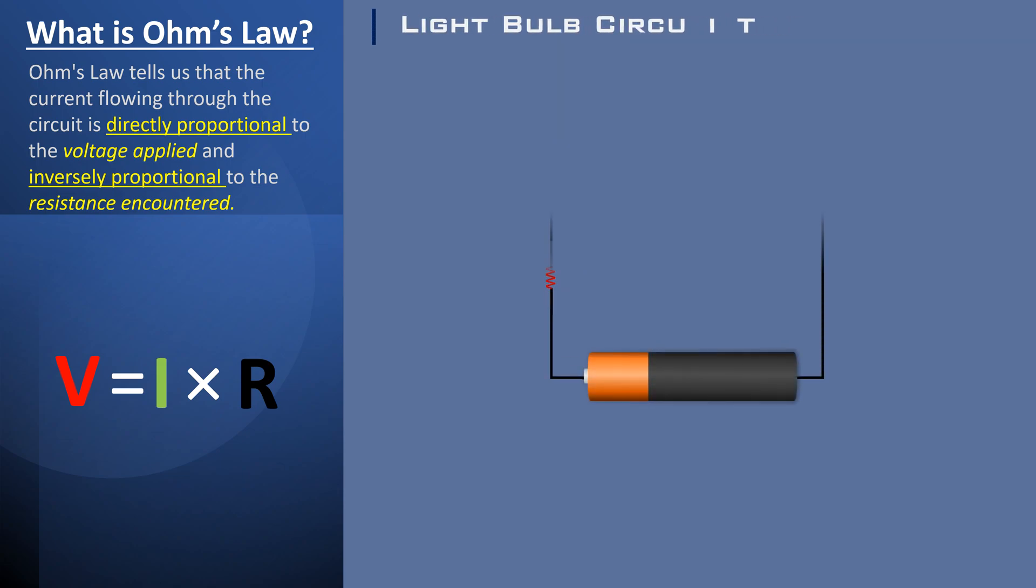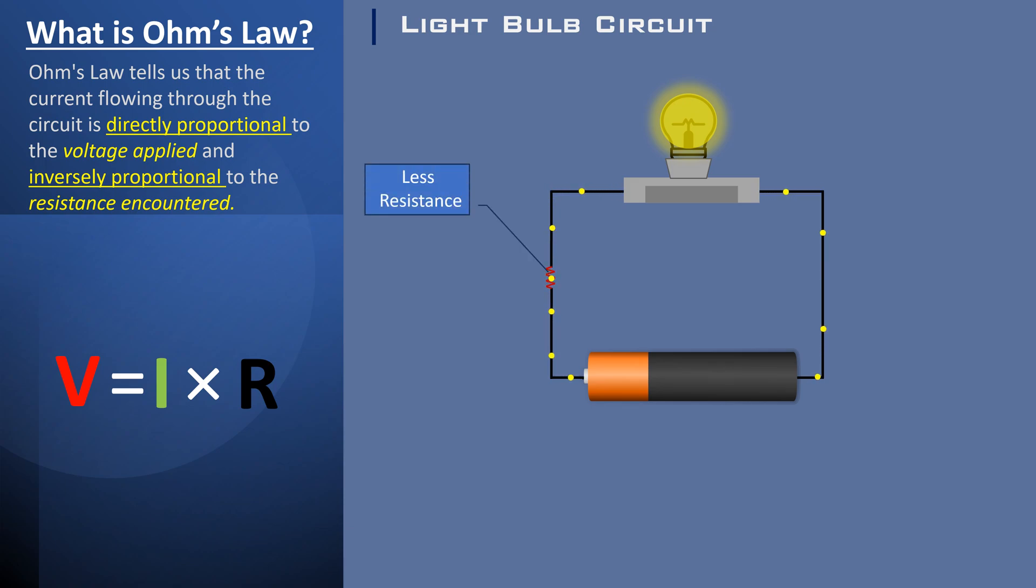Suppose we have a battery that provides sufficient voltage and current to the lightbulb with a lower value of resistance. Initially, the bulb shines brightly. However, as the resistance in the circuit increases, it restricts the voltage and the flow of current. Consequently,